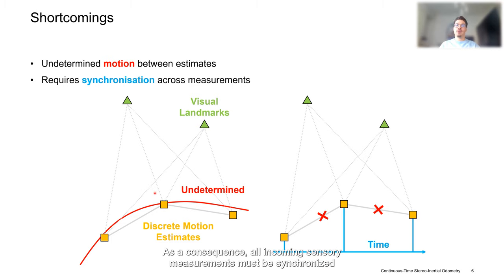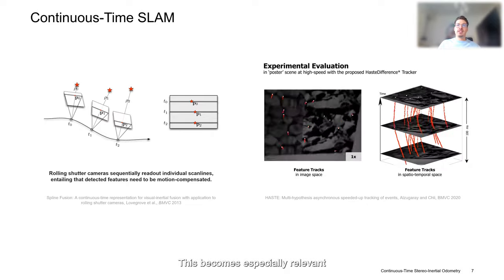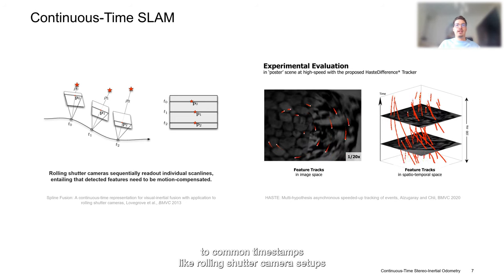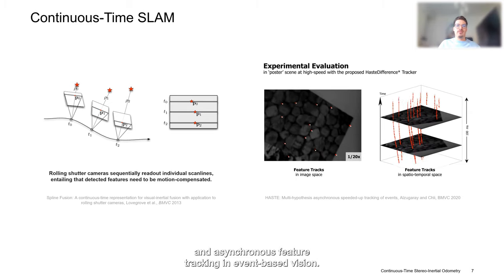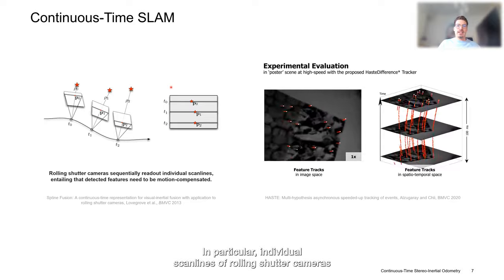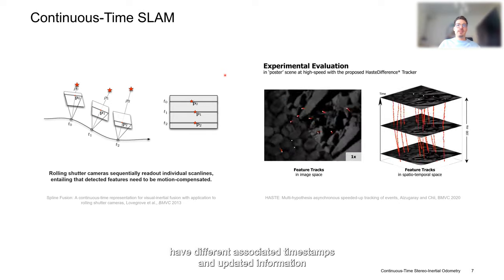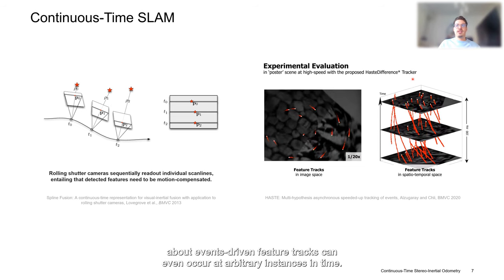As a consequence, all incoming sensory measurements must be trivially synchronized to common timestamps, also entailing that asynchronous measurements cannot be fused in such manner. This becomes especially relevant in applications where measurements cannot be trivially synchronized to common timestamps, like rolling shutter camera setups and asynchronous feature tracking in event-based vision. In particular, individual scan lines of rolling shutter cameras have different associated timestamps, and updated information about event-driven feature tracks can even occur at arbitrary instances in time.